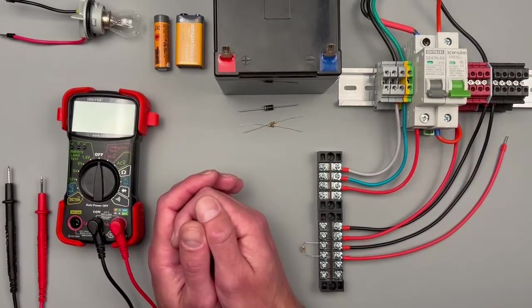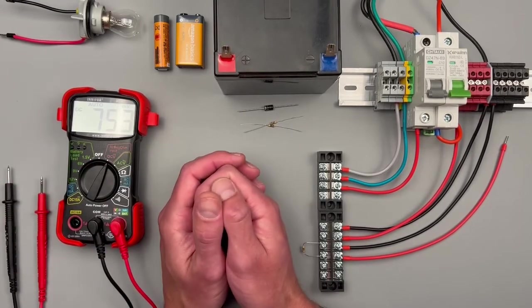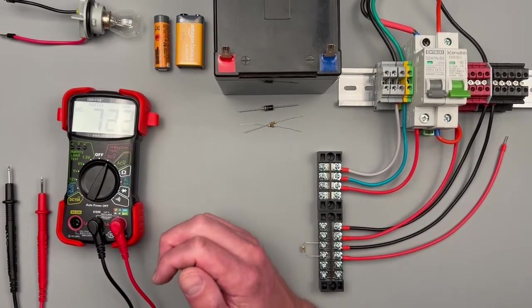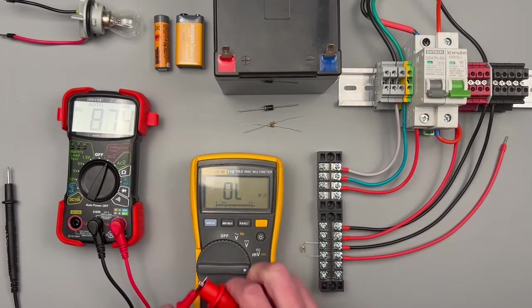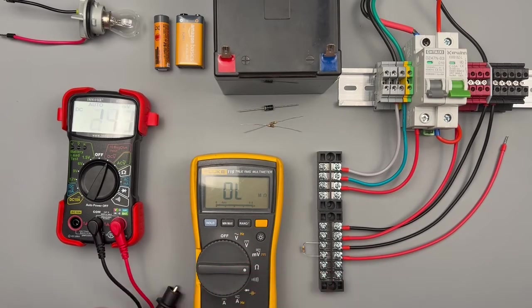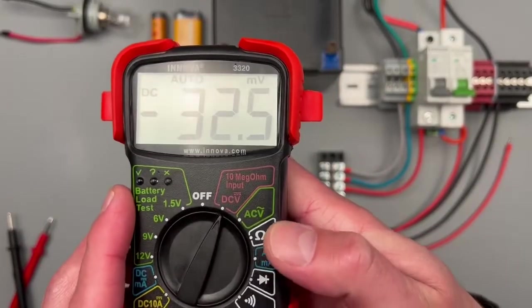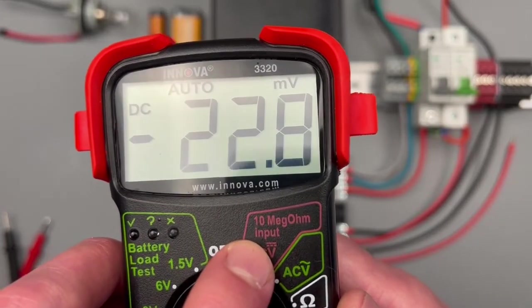Let's start on this 10 mega ohm input. What does that mean? It means that the internal resistance of the meter is going to be at least 10 mega ohms. Why is that important to you? It's not at all, it's just marketing. We can see we're reading here about 11 mega ohms, so at least they're true to that part. We know this is a DC voltage measurement because it says DC, but it's also indicated by this solid and dashed line above the V.